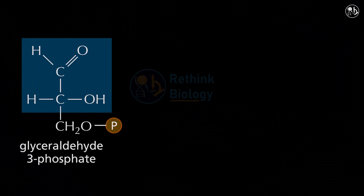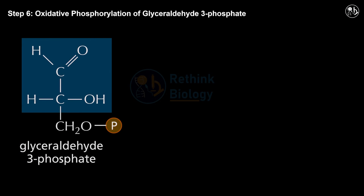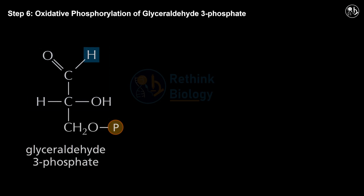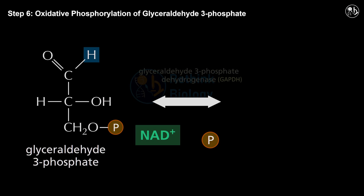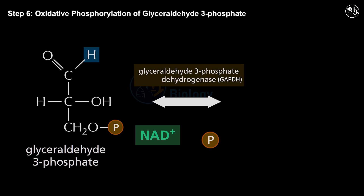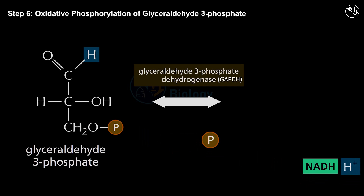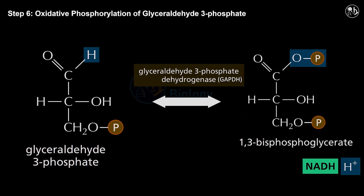Step 6: Oxidative phosphorylation of glyceraldehyde-3-phosphate. In this step, each molecule of GAP undergoes two reactions. First, it is dehydrogenated by enzyme glyceraldehyde-3-phosphate dehydrogenase (GAPDH), which transfers one hydrogen molecule to oxidizing agent nicotinamide adenine dinucleotide (NAD+) to form NADH and H+. Second, GAPDH adds phosphate from the cytosol to the oxidized GAP to form 1,3-bisphosphoglycerate, which has two phosphate groups attached to its first and third carbon atoms.